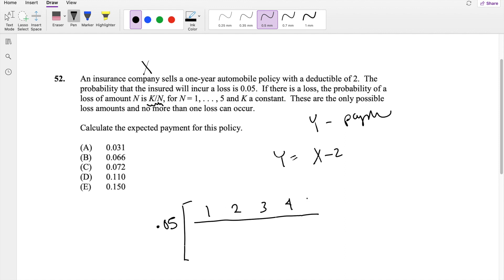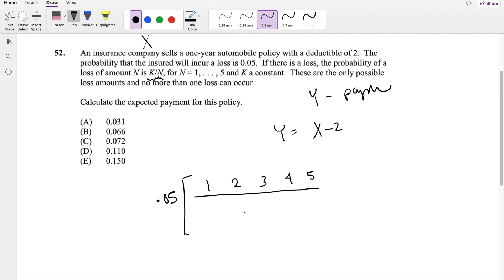So N can only take values 1, 2, 3, 4, or 5. This is actually the X value here. The probability of the X value is going to be just K over N. So this is K over 1, K over 2, K over 3, K over 4, and K over 5.